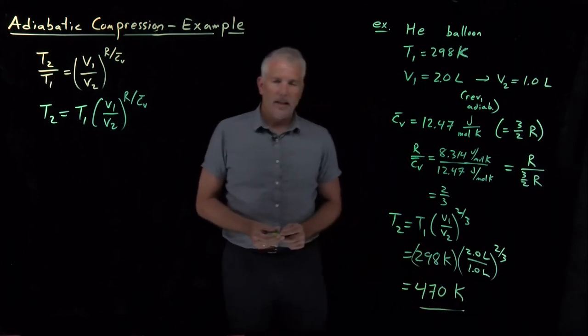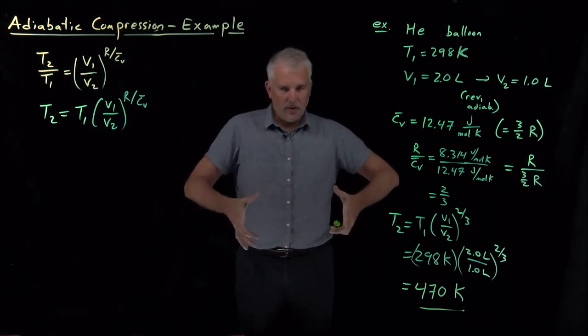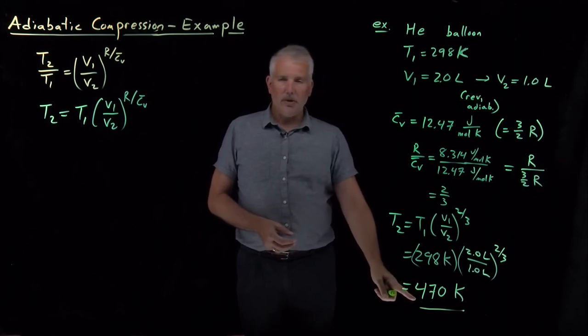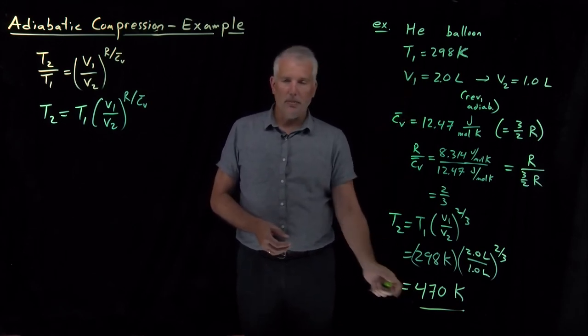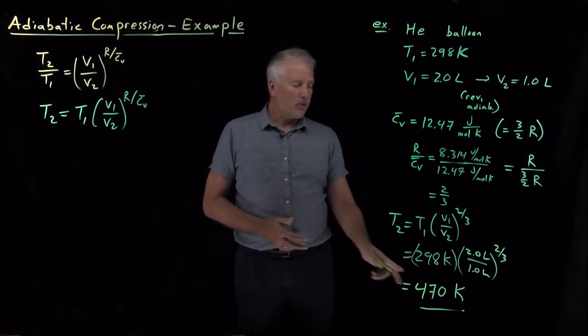That's actually kind of a surprisingly large number. If I were able to take a balloon, adiabatically compress it to half its original volume, if that balloon contains helium with this heat capacity, then the final temperature of that balloon is going to be quite hot, 470 Kelvin. There's a couple reasons for that.